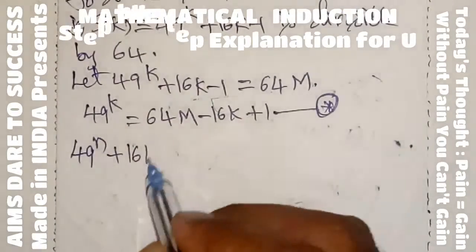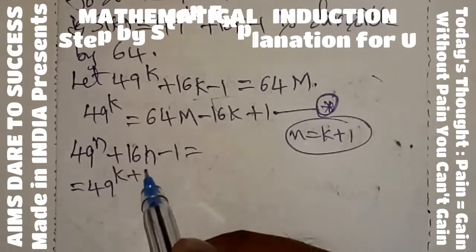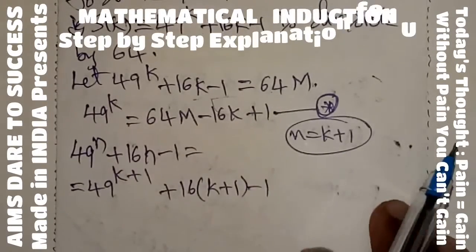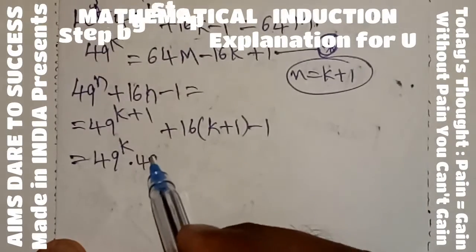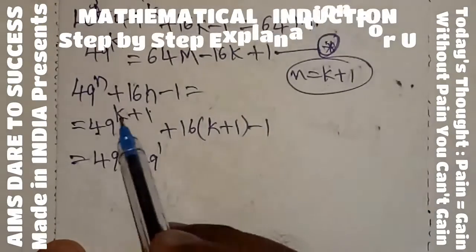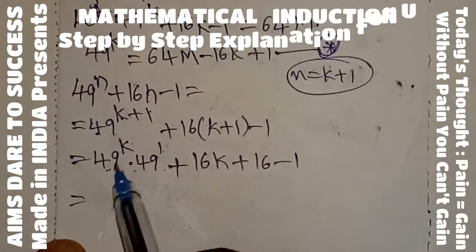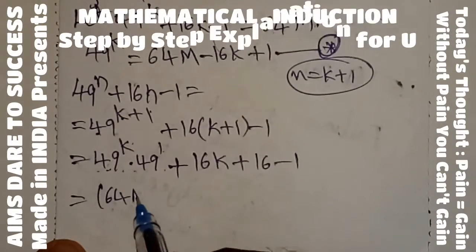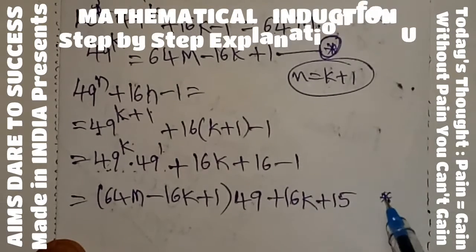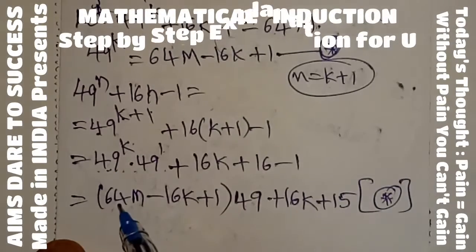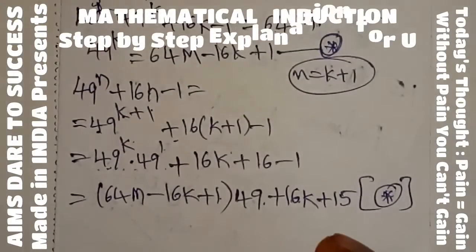Now substitute n equal to k plus 1 in the given value. We get 49 power (k+1) plus 16 into (k+1) minus 1. Using the exponent rule, 49 power (k+1) equals 49 power k into 49. So we have 49 power k into 49 plus 16k plus 16 minus 1. According to the previous equation (*), substituting 49 power k equals 64m minus 16k plus 1, multiplied by 49.